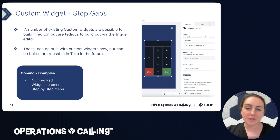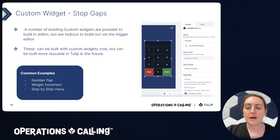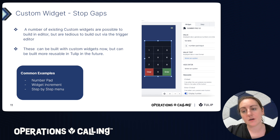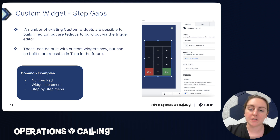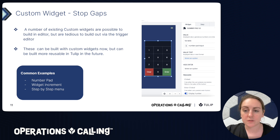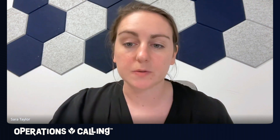The second main use case is what we call stop gaps — larger pieces of functionality that are easier to build in a custom widget than in the app editor. An example is a number pad that looks like an old cell phone, with all numbers plus clear and enter options. You could theoretically build this with buttons and triggers inside the app editor, but it's much quicker as a custom widget. You can configure a trigger to emit an event on enter or clear. There are a number of examples on Tulip Library for use cases like this, such as an increment widget or a step-by-step menu.